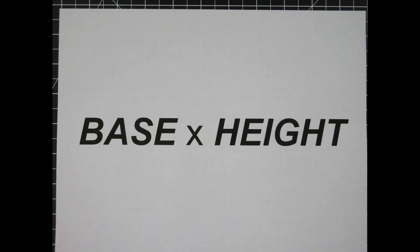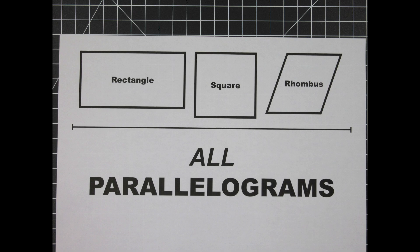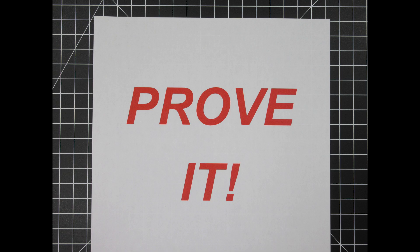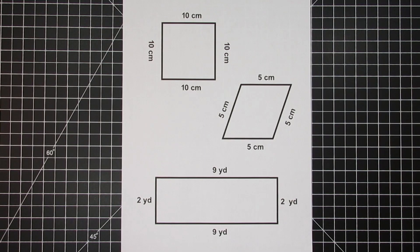Base times height is the one that we're going to go with. Why base times height? The reason all four of these shapes are actually parallelograms. You might say prove it. To be a parallelogram we have four sides, they're all straight, opposite sides are parallel, opposite sides are also the same length, and finally opposite angles are the same.